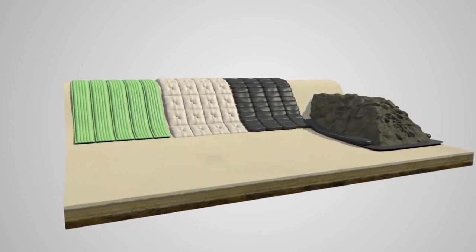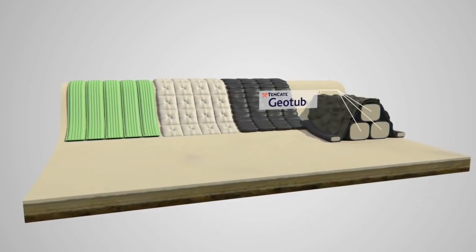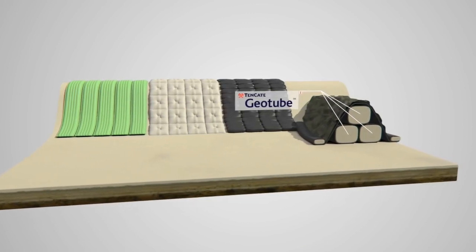Groins made with Tenkata Geotube systems reduce the impact of high volumes of water flow and the lateral drift of sand.